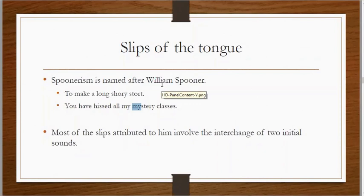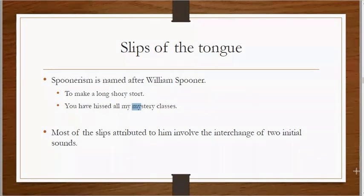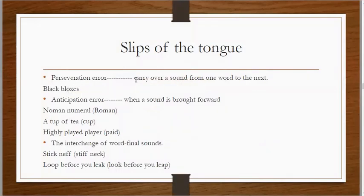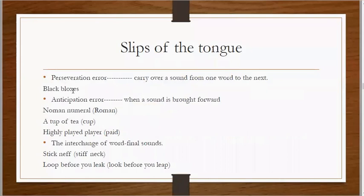Most slips attributed to William Spooner involved the interchange of two initial sounds, but it is not only initial sounds. We also have a perseveration error, in which we carry over a sound from one word to the next.